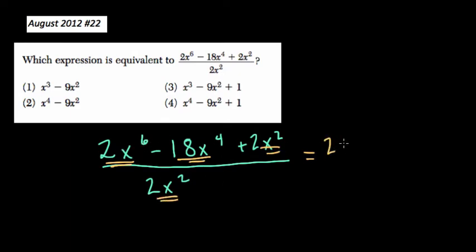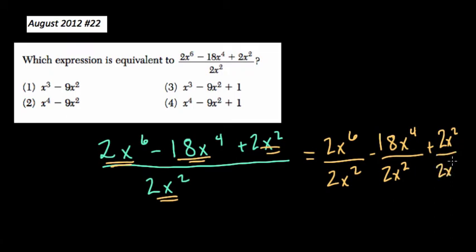You had to have 2x to the sixth over 2x squared minus 18x to the fourth over 2x squared, the same denominator, plus 2x squared over 2x squared. If you had these and they all have the same denominator, you could combine them into one large fraction. So that is the reason and sense that you can develop to understand why you have to divide each term by the same denominator.